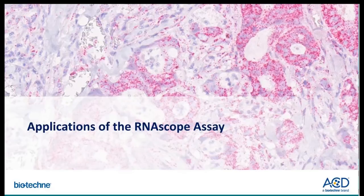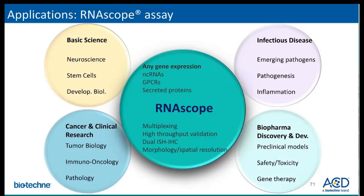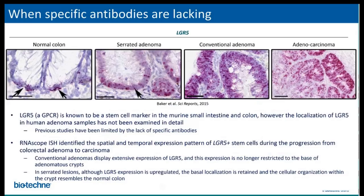Now I'm going to jump to the applications of the RNAscope assay. Here are some of the key areas where RNAscope has been increasingly used. For many targets, reliable antibodies for IHC detection are not available. An example is LGR5, which is an intestinal stem cell marker. In this study, the authors used RNAscope to detect LGR5 in human colorectal cancer samples.